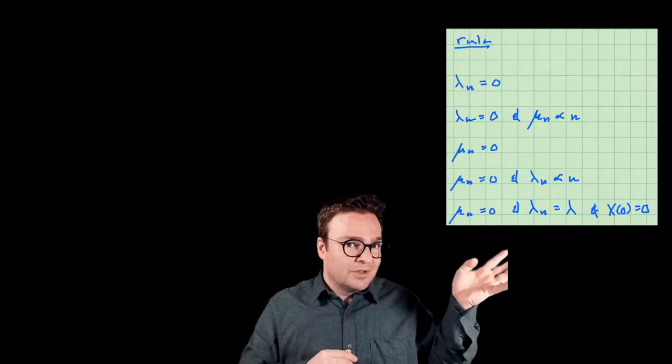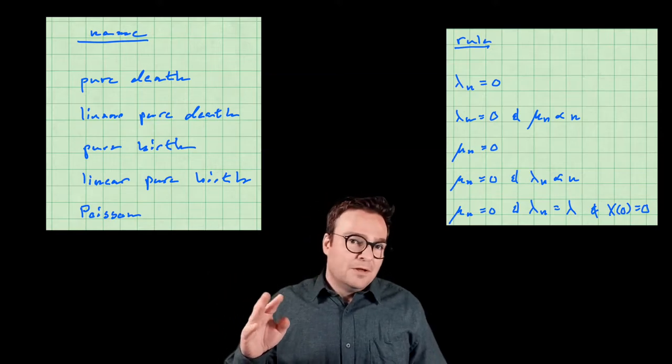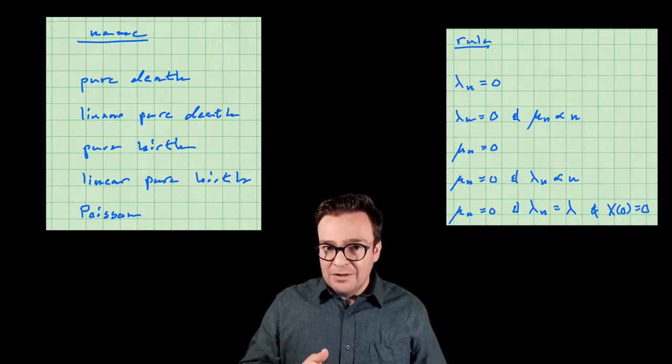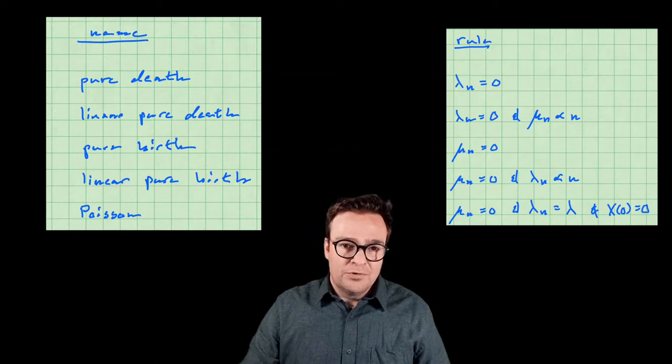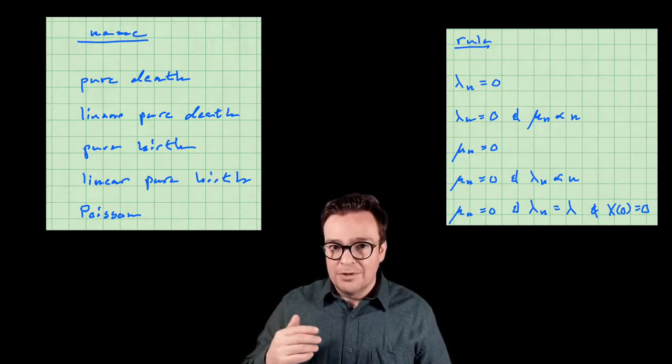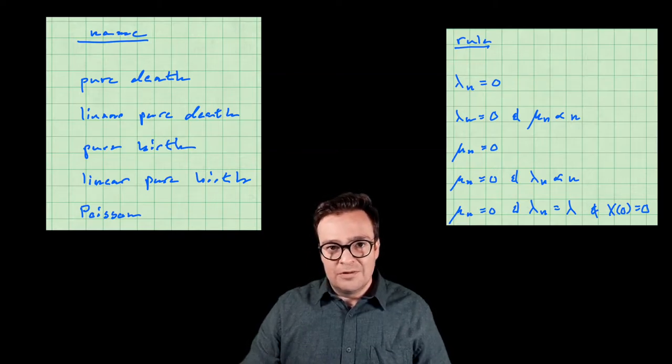In this lecture we're going to talk about birth and death processes. These are ominously named, and they're really similar to Poisson processes in that they count things, but different in that they count both up and down. When they count up, we call that a birth event, and when they count down, we call that a death event. There are special cases that get special names. We're going to define them, then focus on calculating their limiting distributions, or stationary distributions, or long-term distributions. We'll work out a proof for what those are, and these will turn into a useful tool for our next lecture on queuing systems.